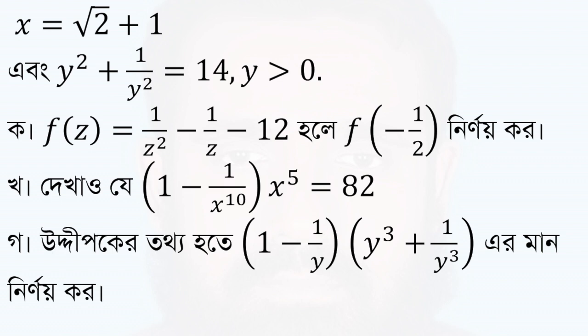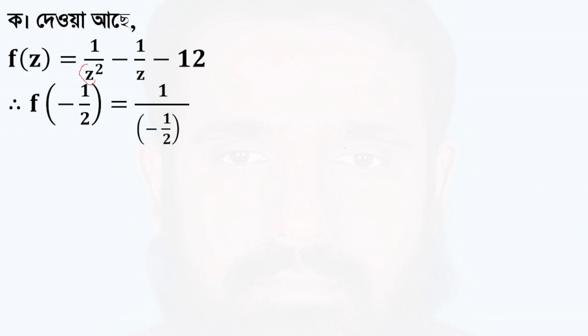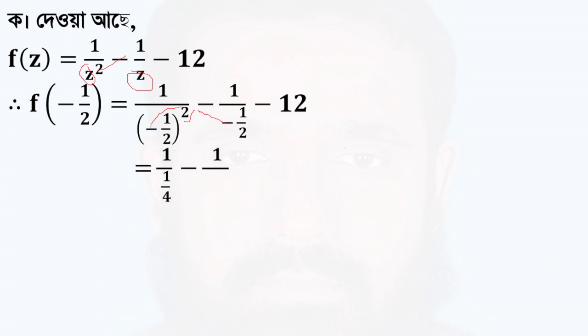Here, y is greater than 0. We define a function F of z, where F of z equals 1 by z squared minus 1 by z minus 12. Then f of minus 1 by 2 is computed as 1 by z minus 2 by z, continuing with minus 1 by z minus 6, minus 1 plus 1 by z.